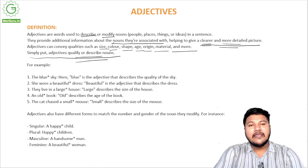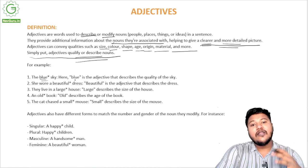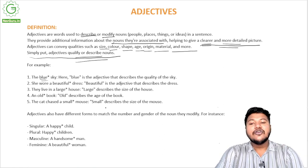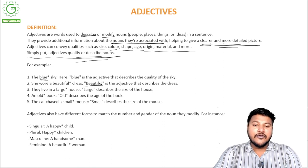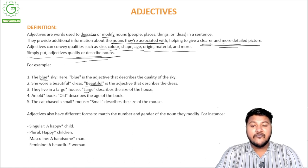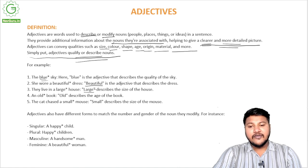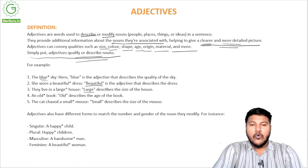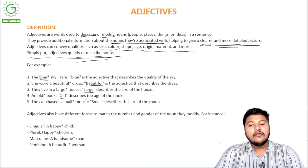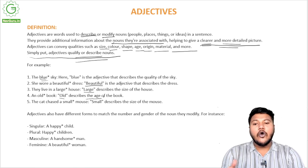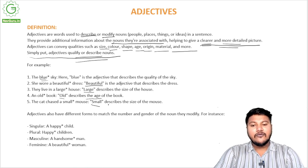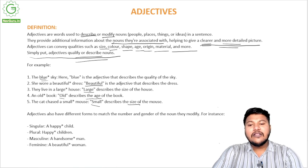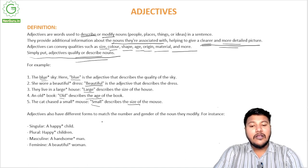Simply put, adjectives qualify or describe nouns. For example: 'the blue sky' — here 'blue' is the adjective describing the sky's color. 'She wore a beautiful dress' — 'beautiful' describes the dress. 'They live in a large house' — 'large' describes the size. 'An old book' — 'old' describes the age. 'The cat chased a small mouse' — 'small' describes the size. So blue, beautiful, large, old, and small are all adjectives.